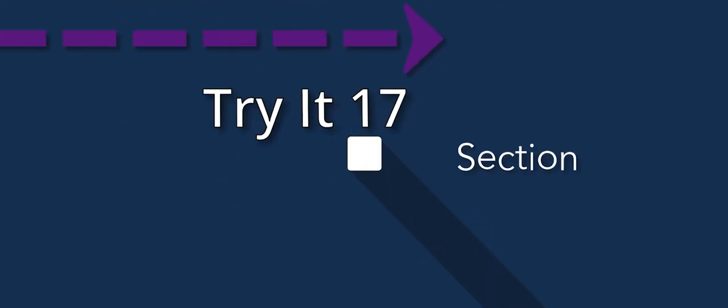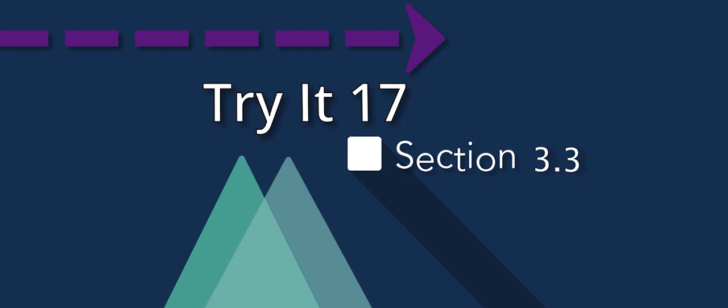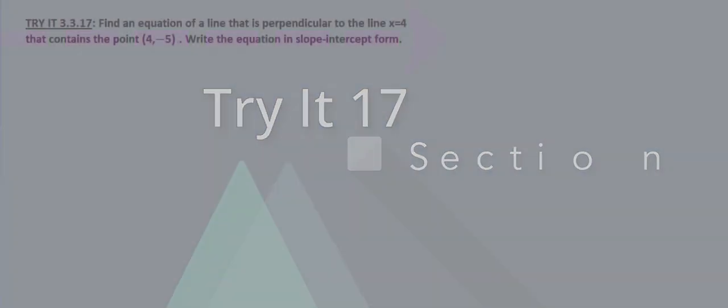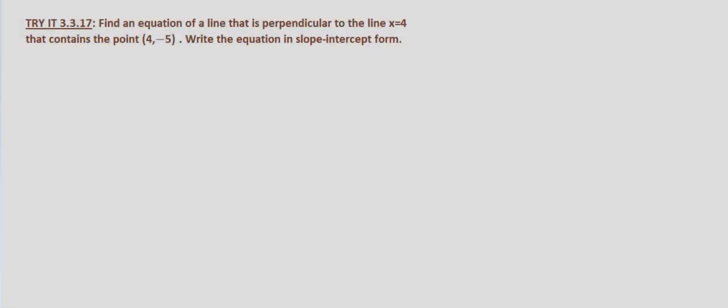In this problem we're asked to find the equation of a line that is perpendicular to the line x equals 4 and that contains the point (4, -5), and we're asked to write the equation in slope-intercept form.